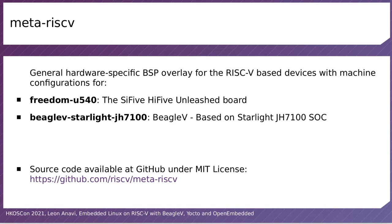Meta RISC-V is a collection for all supported RISC-V machines capable of running Linux, and currently there are only two of them: the SiFive HiFive Unleashed board, which is great but quite expensive at about a thousand US dollars, and BeagleV-5, which is significantly more affordable. The source code of the Meta RISC-V layer is available on GitHub under the MIT license.